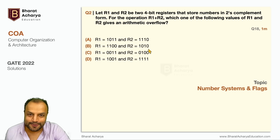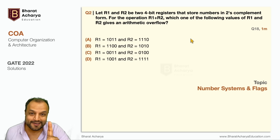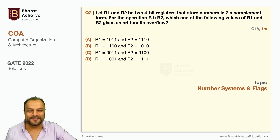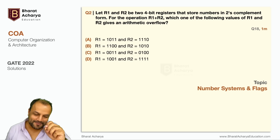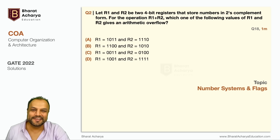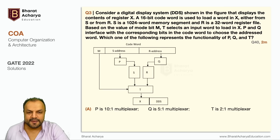There are four sets of values given. For each of them you do addition and figure out overflow. Addition will be faster if you've practiced. Figuring out overflow will be faster if you know the shortcut I'm going to tell you — one simple way where no calculations are required. Just looking at the result, you immediately know whether there's an overflow or not.